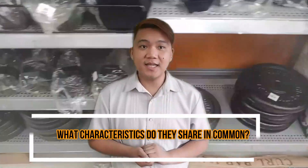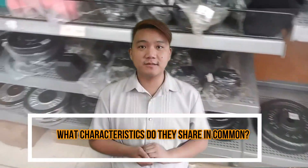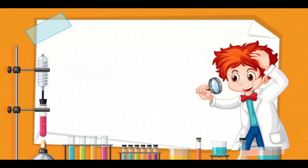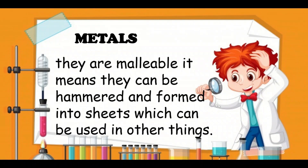Let us observe these examples. What characteristics do they share in common? You are right. They are metals. They are malleable. It means they can be hammered and formed into sheets, which can be used in other things.